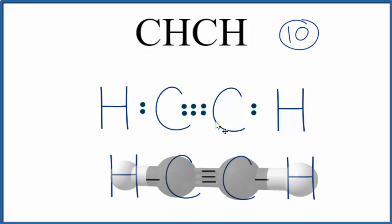This is Dr. B with the Lewis structure for CHCH, also called C2H2, ethyne or acetylene. Thanks for watching.